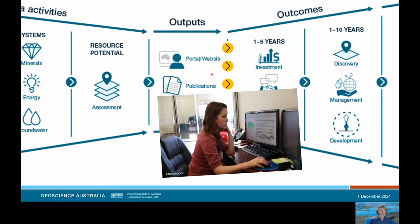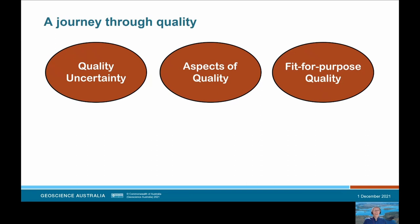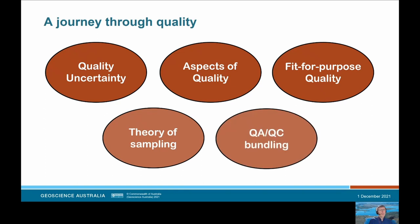This is where people like Joe come in and where quality matters in building that trust. Joe is the person who transforms our outputs to outcomes. She makes decisions based on our products and our data. Part of that decision making is whether she can trust the data and whether it is of sufficient quality for her purposes. I'll frame this discussion by introducing three concepts around quality: quality uncertainty, aspects of quality, and fit for purpose quality. I'll also talk about a couple of quality management tools — the theory of sampling and QAQC bundling.